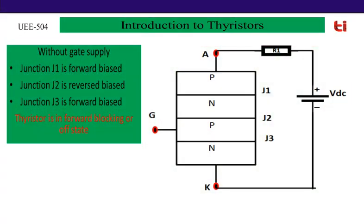Now let's discuss the working principle of the thyristor. Thyristor is a four-layer device: P, N, P, N. The top P-type material (anode) is connected to positive supply of the battery, and the N-type material (cathode) is connected to negative supply. If the gate is not connected to any other supply, then junction J1 is forward biased, junction J2 is reverse biased, and J3 is forward biased.